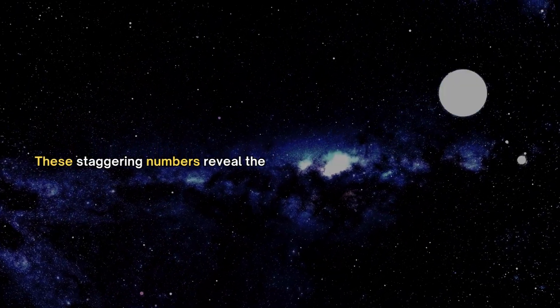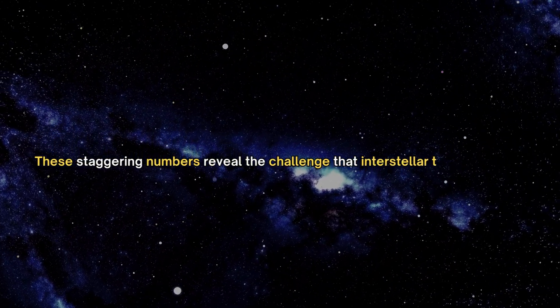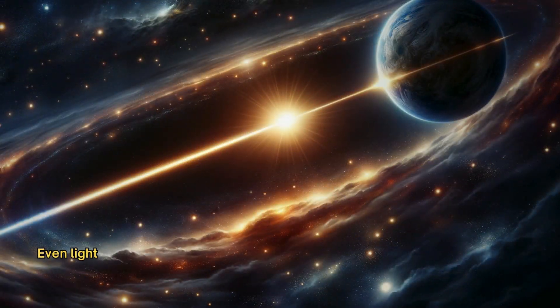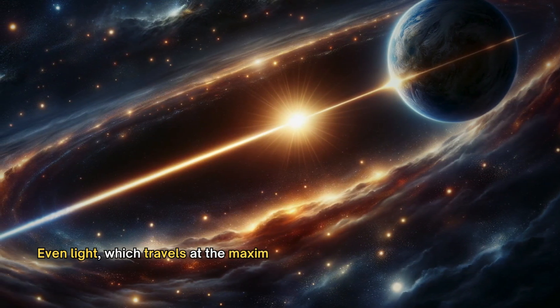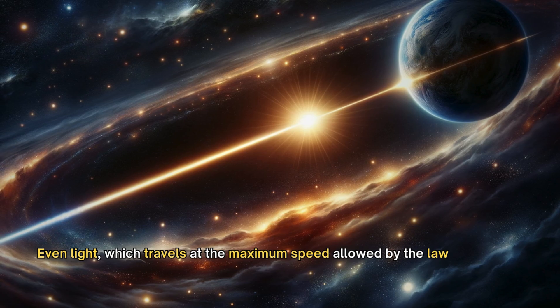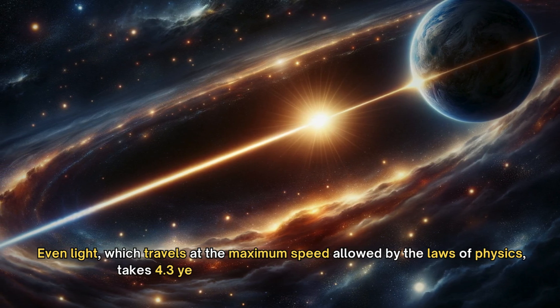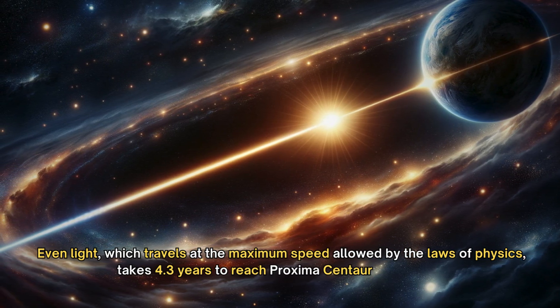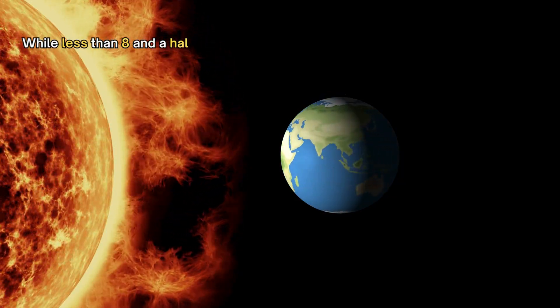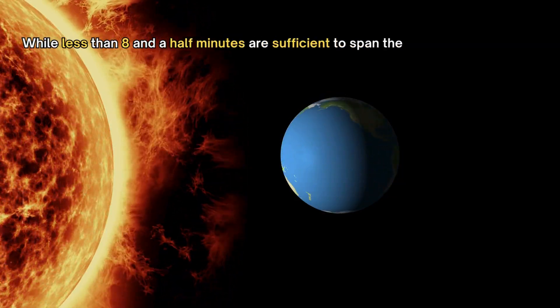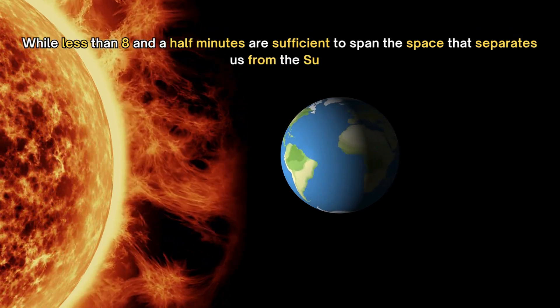These staggering numbers reveal the challenge that interstellar travel presents. Even light, which travels at the maximum speed allowed by the laws of physics, takes 4.3 years to reach Proxima Centauri from Earth, while less than eight and a half minutes are sufficient to span the space that separates us from the Sun.